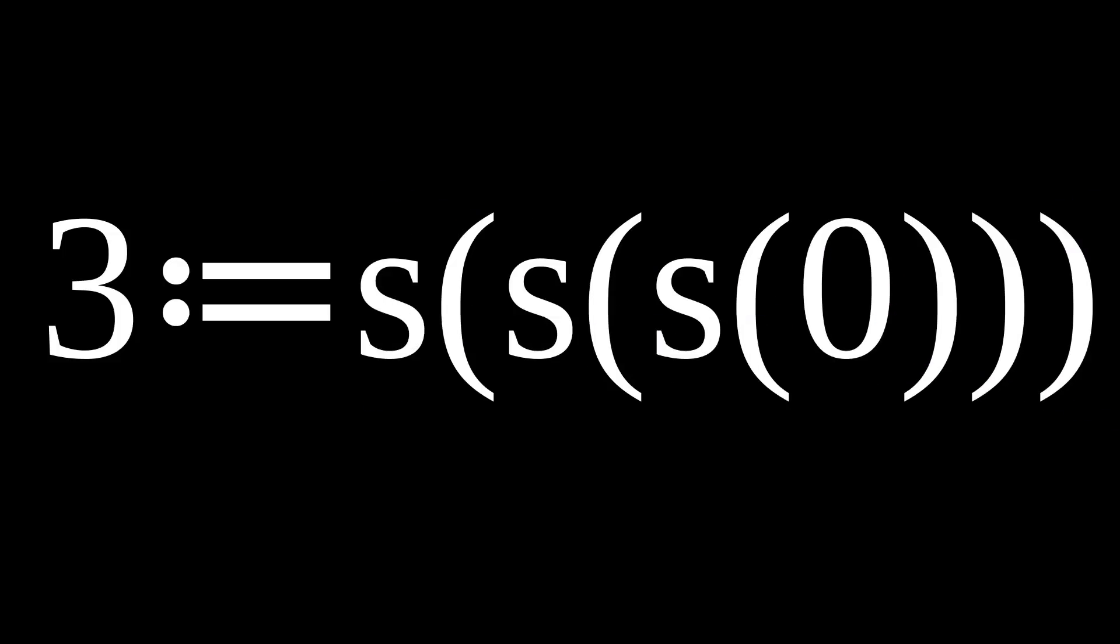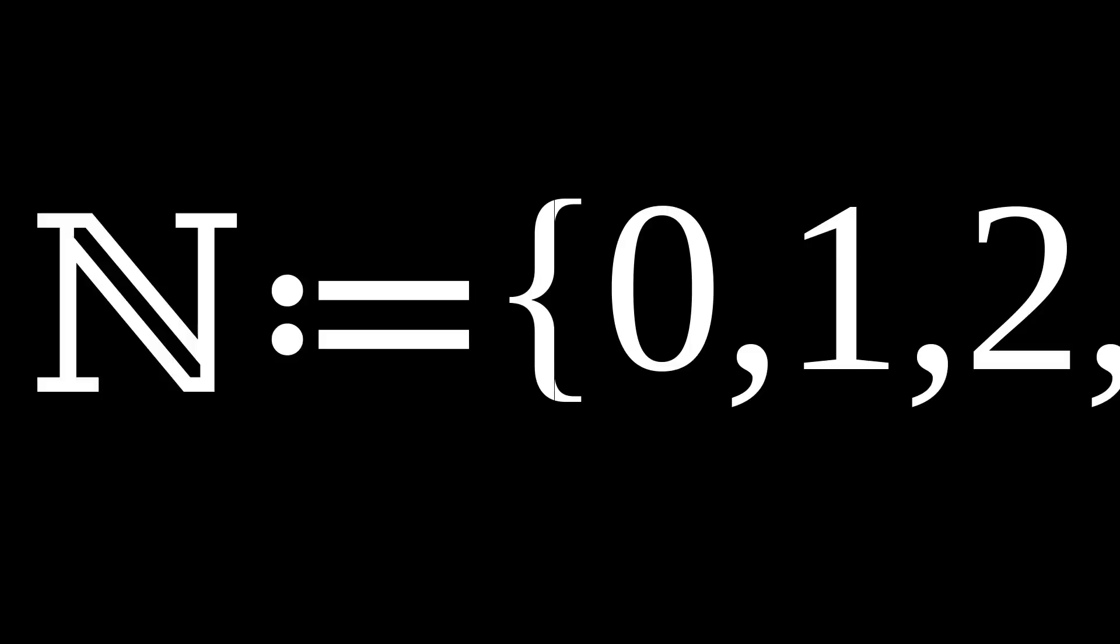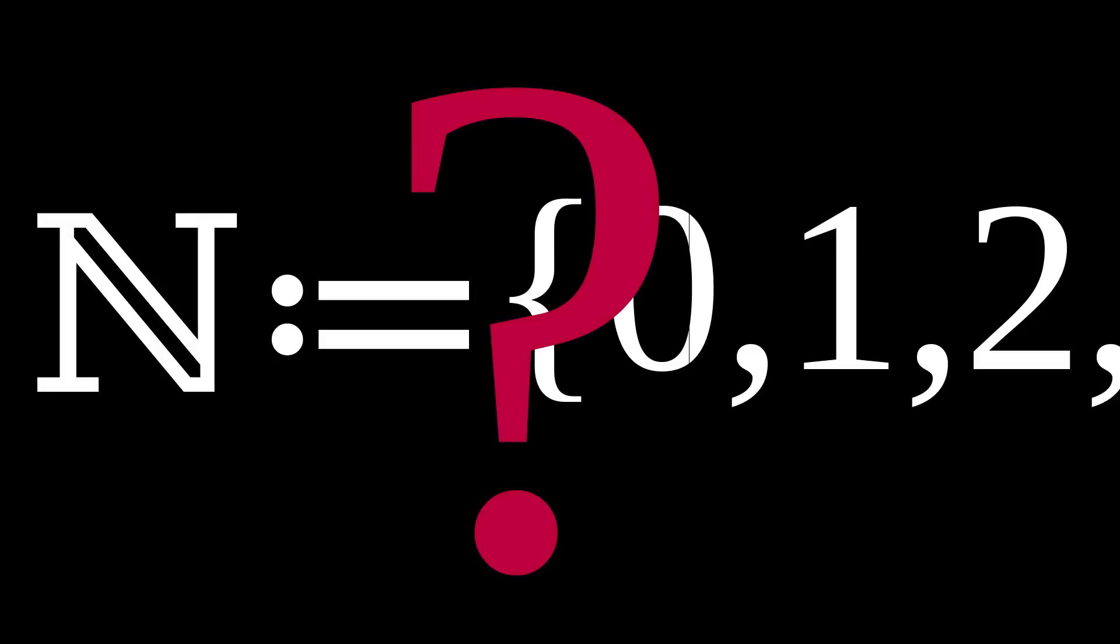Because every number is either zero or the successor of some other number, we can get rid of the curly braces entirely and instead write three as s of s of s of zero. Here's all of these in curly braces—trust me, they're all there to the right. This is the set of natural numbers.